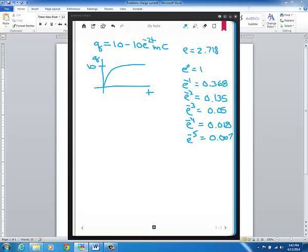once you get up to the exponent of e being minus 5, well now you're going to have 10 times 0.007, which is 0.07. Subtract that from 10 and it's 9.93.